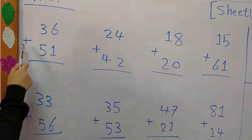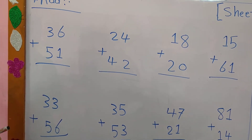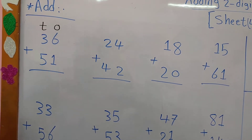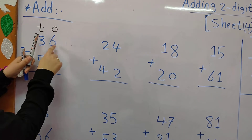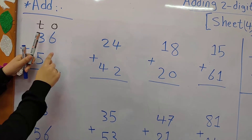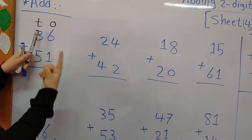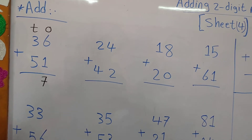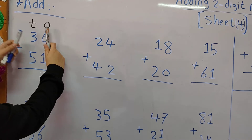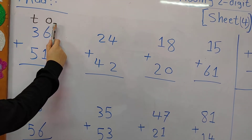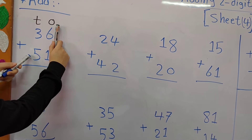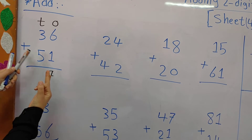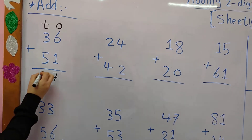Here we have 36 plus 51. The first thing: write O and T. Then 6 plus 1 — I put the greatest number, 6, in my mind and 1 on my fingers. I count after 6. After 6: 7. Write 7. Here, 3 plus 5 — where is the greatest number? 5. I put 5 in my mind and 3 on my fingers and count after 5. After 5: 6, 7, 8. Write 8.